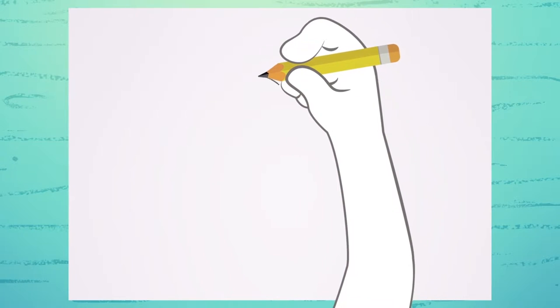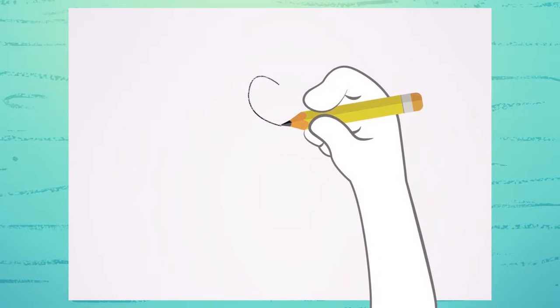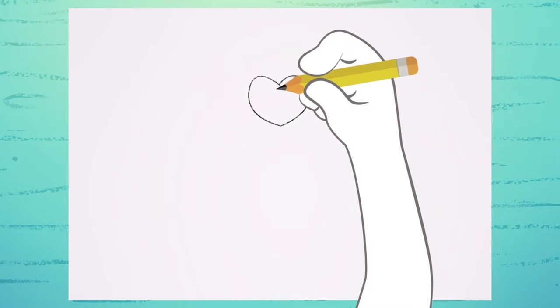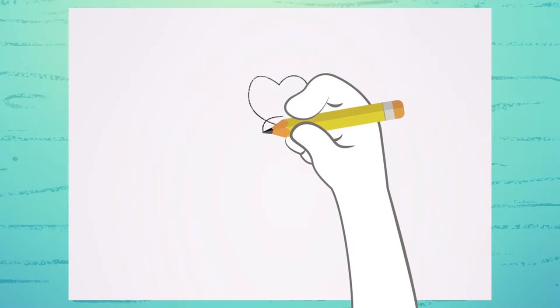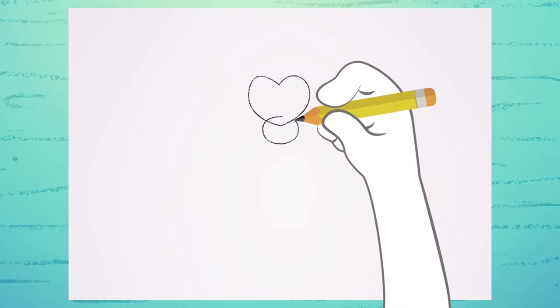First, draw the heart right around here in the middle of the paper. Now, draw a small circle. Look how this line crosses right on top of the heart.